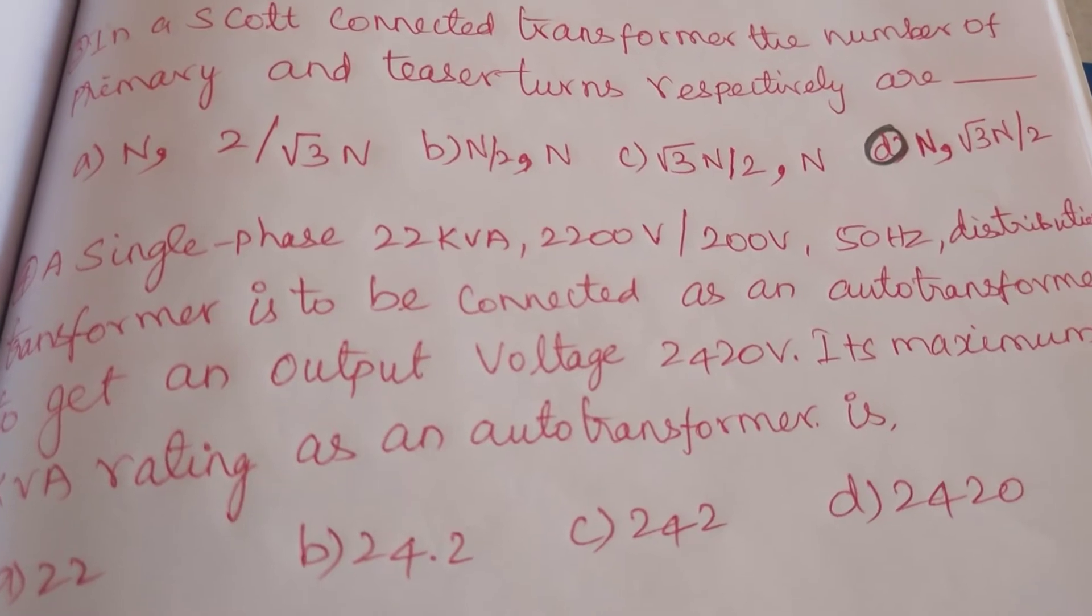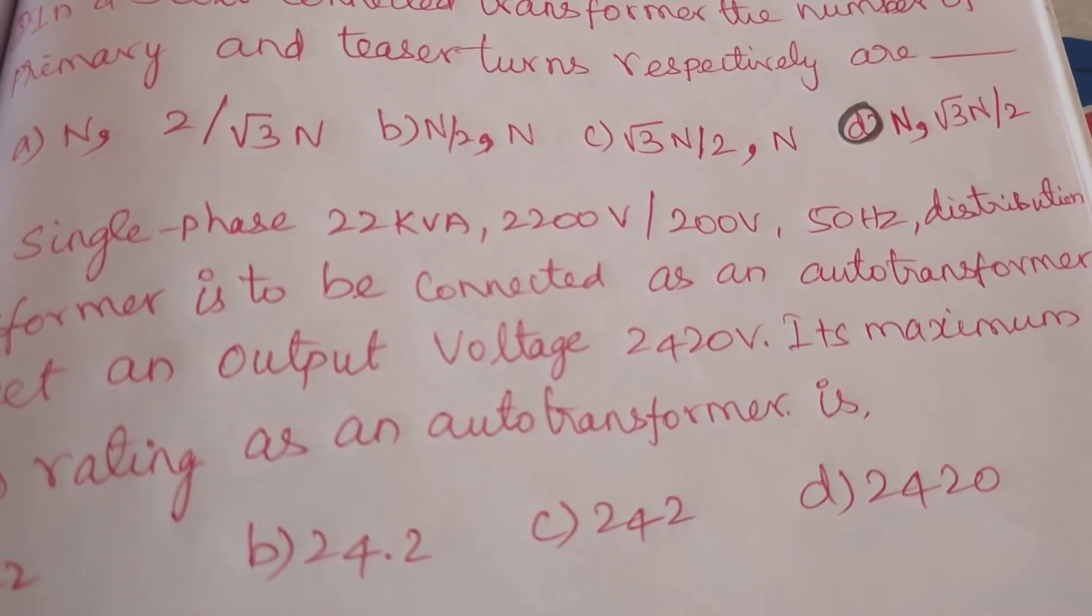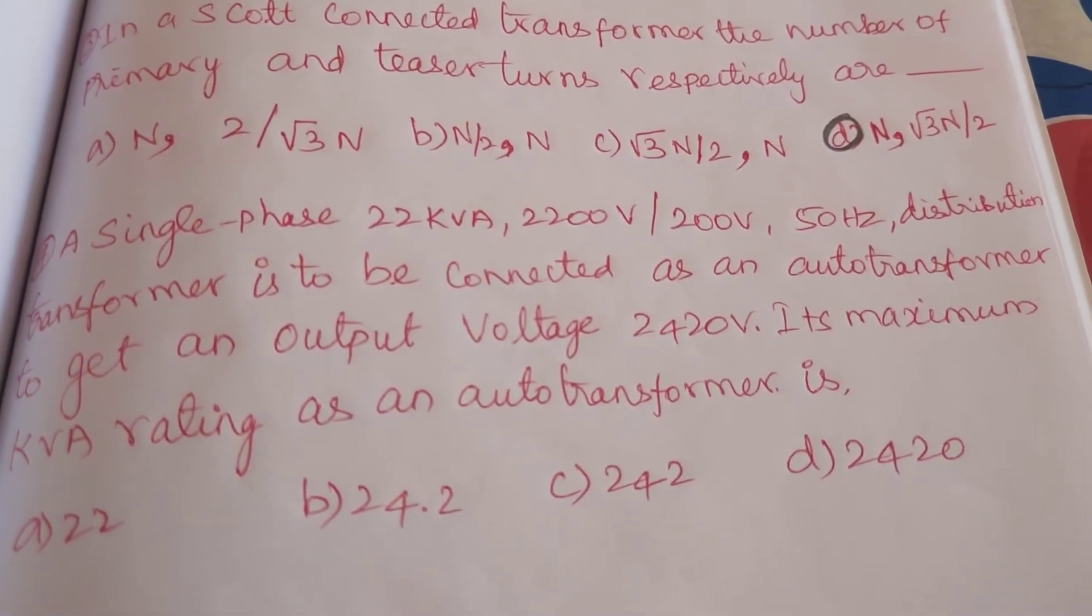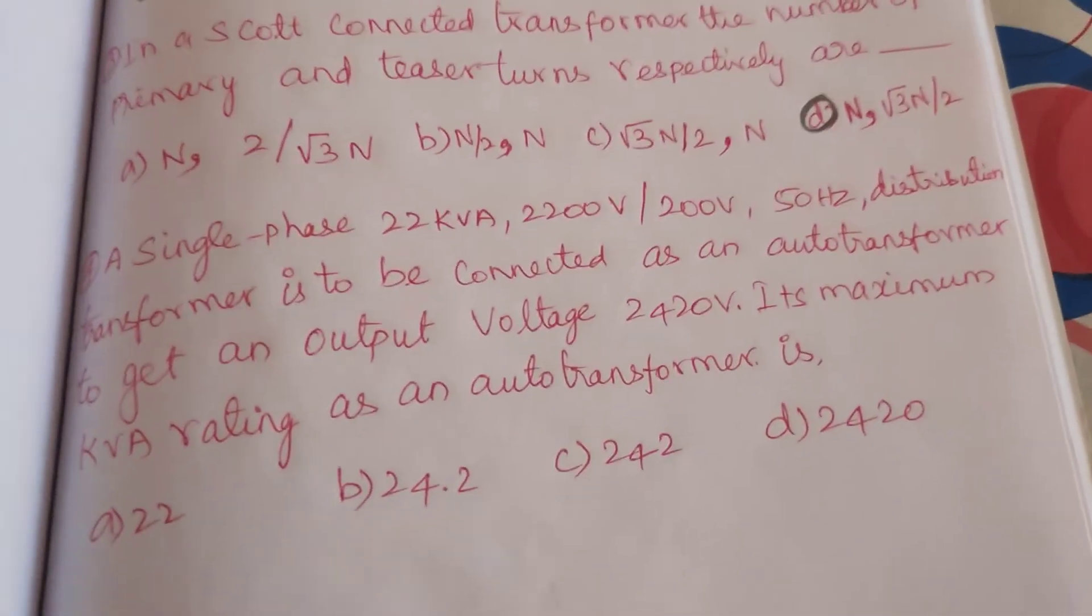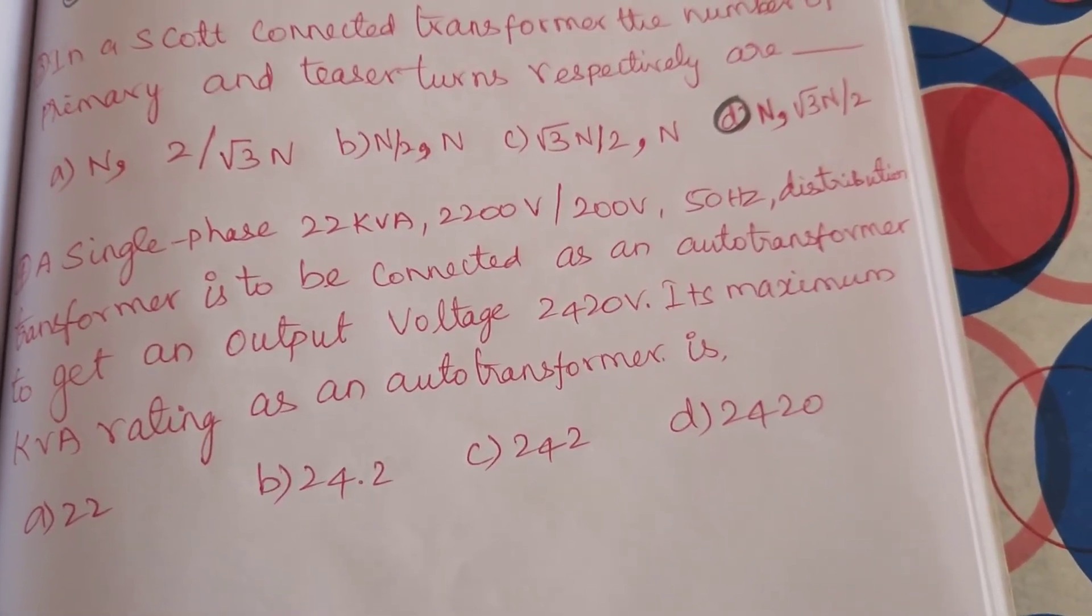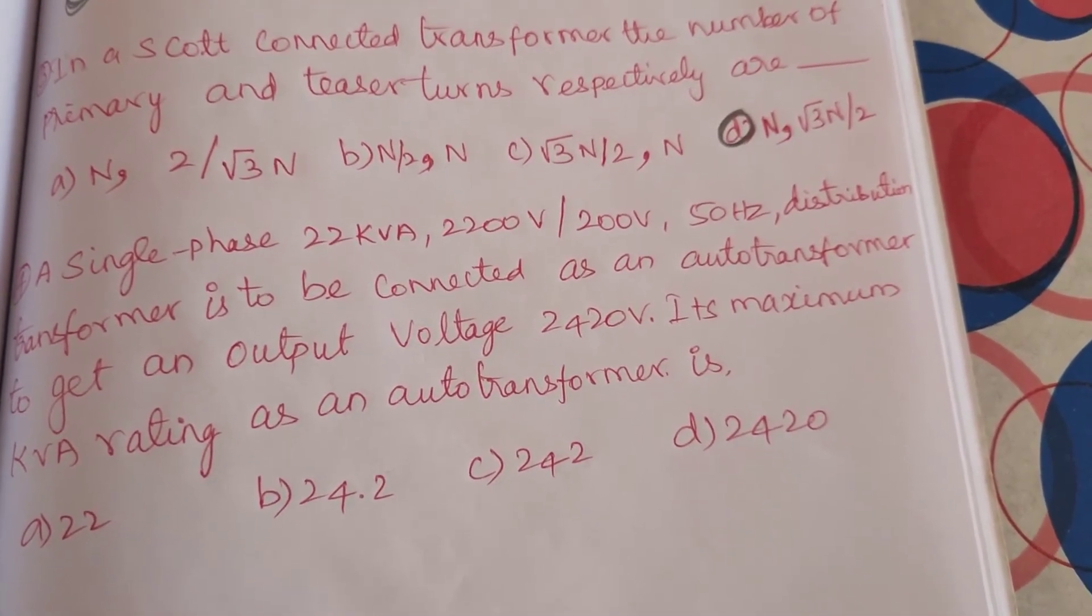Next, a single phase 22 kVA, 2200 volt by 200 volt, 50 hertz distribution transformer is to be connected as an auto transformer to get an output voltage of 2420 volt. Its maximum kVA rating as an auto transformer is...